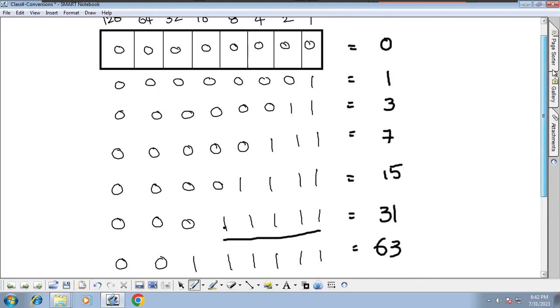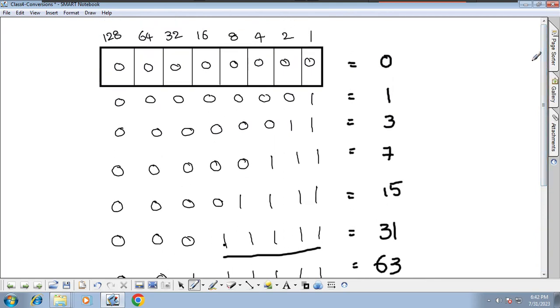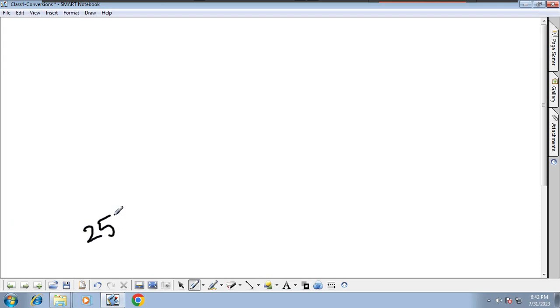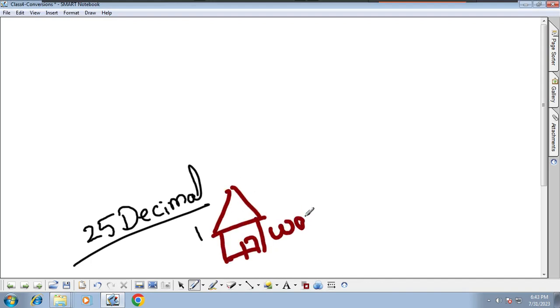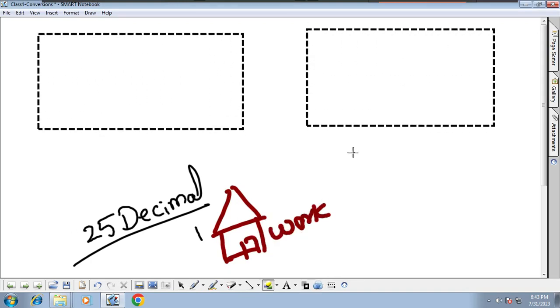In next class, I will be finishing this conversion process. Do this as homework. Again, I am going to give you homework: take twenty-five decimal numbers and convert those numbers into binary. This is homework. Once you are done, submit in our group. If you don't want to submit, just leave it, no problem. But you do practice well.